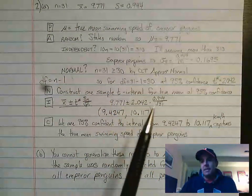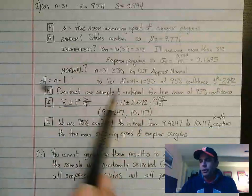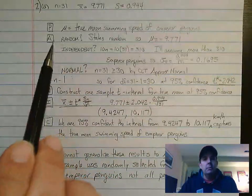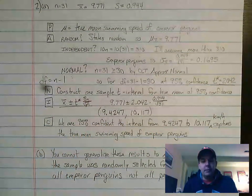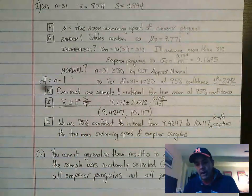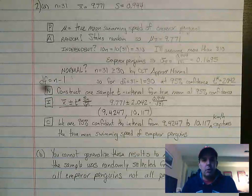It asked us to run a 95% confidence interval. So we go through the PANIC process. P: mu equals the true mean swim speed of an emperor penguin. Parameter mu, true mean, and context. That's what they're looking for.